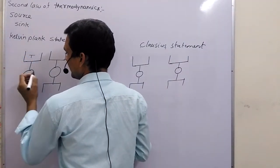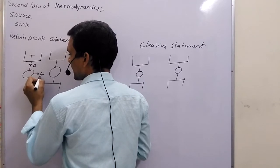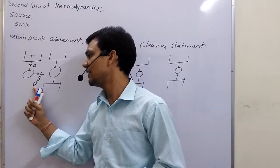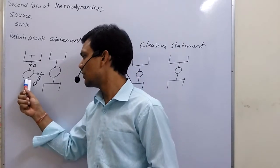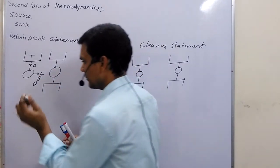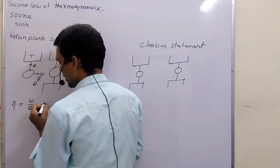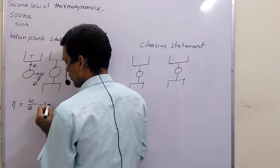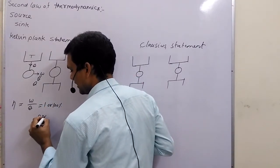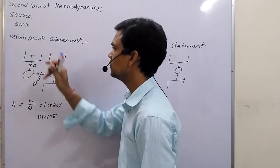Suppose this is a single energy reservoir at temperature T. From here, we are extracting Q amount of energy and this device produces W amount of work, which is equal to the supplied heat. This is impossible because heat always has an associated wastage part — not all of it is useful. If we talk about efficiency, the formula is W upon Q. Since W and Q are both equal, efficiency equals 1 or 100%, which is an impossible case. If it were possible, it would be called a PMM of the second kind.